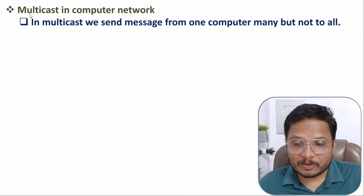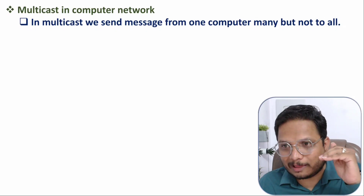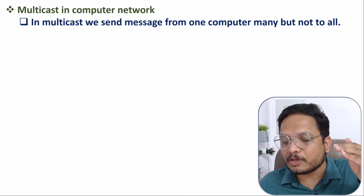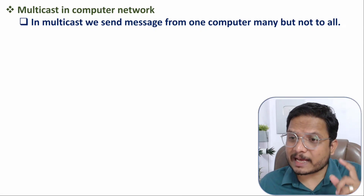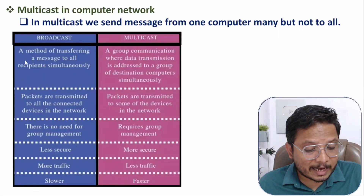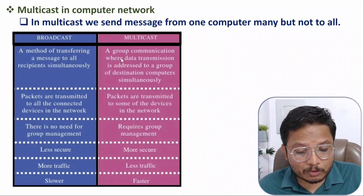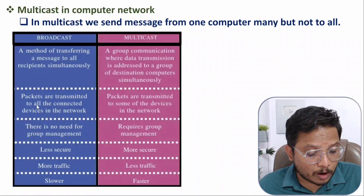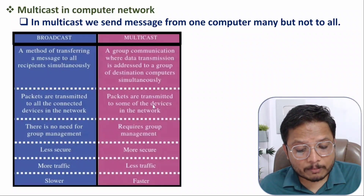Now a very interesting thing you need to understand is multicast. Multicast means one node will be sending data to many nodes, but not all. In broadcasting, you send data to all nodes of a given network, but in multicasting you send data to multiple nodes — meaning a group of nodes. In broadcast, packets are transmitted to all connected devices inside a given network, but with multicast, packets are transmitted to only some of the devices in the network.